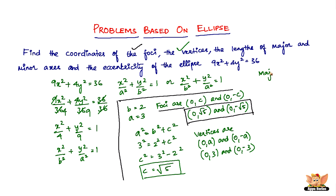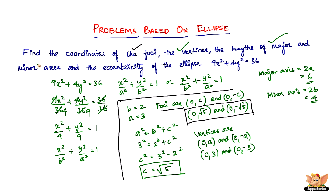Next, the lengths of the major and minor axes. The major axis length is 2a = 2 × 3 = 6, and the minor axis length is 2b = 2 × 2 = 4. So the length of the major axis is 6 and the length of the minor axis is 4.